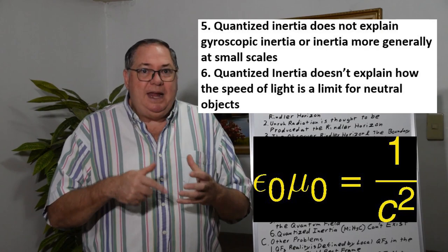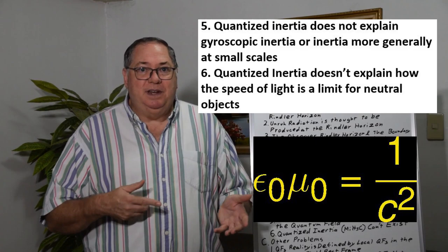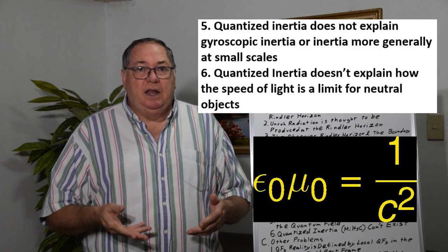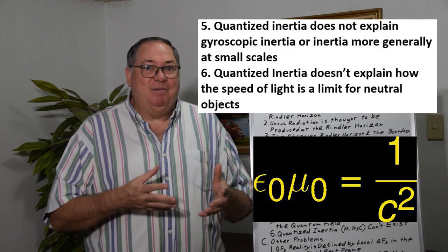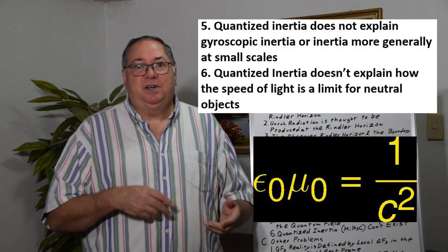We also know that because the speed is limited to the speed of light, and the speed of light is due to the permittivity and permeability of the quantum field, the electric and magnetic constant. Or in the case of a neutral body, there may be a non-electric and non-magnetic constant for neutral bodies that happen to have exactly the same value because the speed of light limit is the same for neutral bodies as it is for charged bodies.